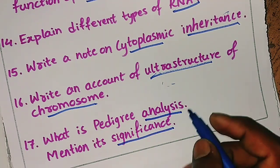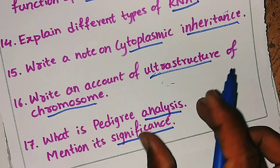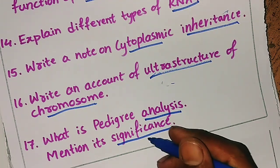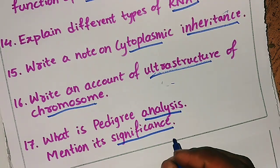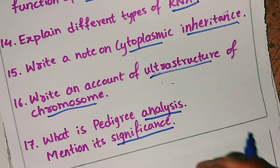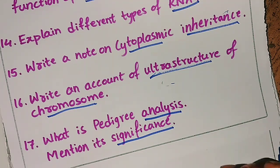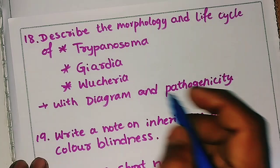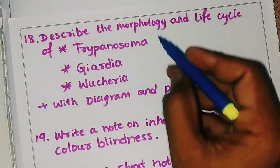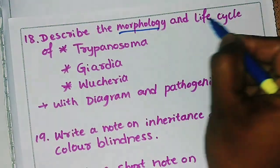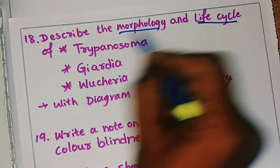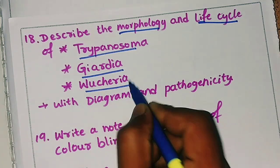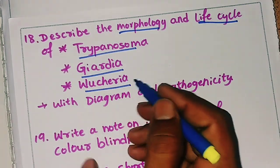For pedigree analysis, write the definition and then mention its significance. The eighteenth question is: describe the morphology and life cycle of Trypanosoma, Giardia, or Wuchereria. They may ask any one of these three — describe the morphology and life cycle with a diagram and pathogenicity.